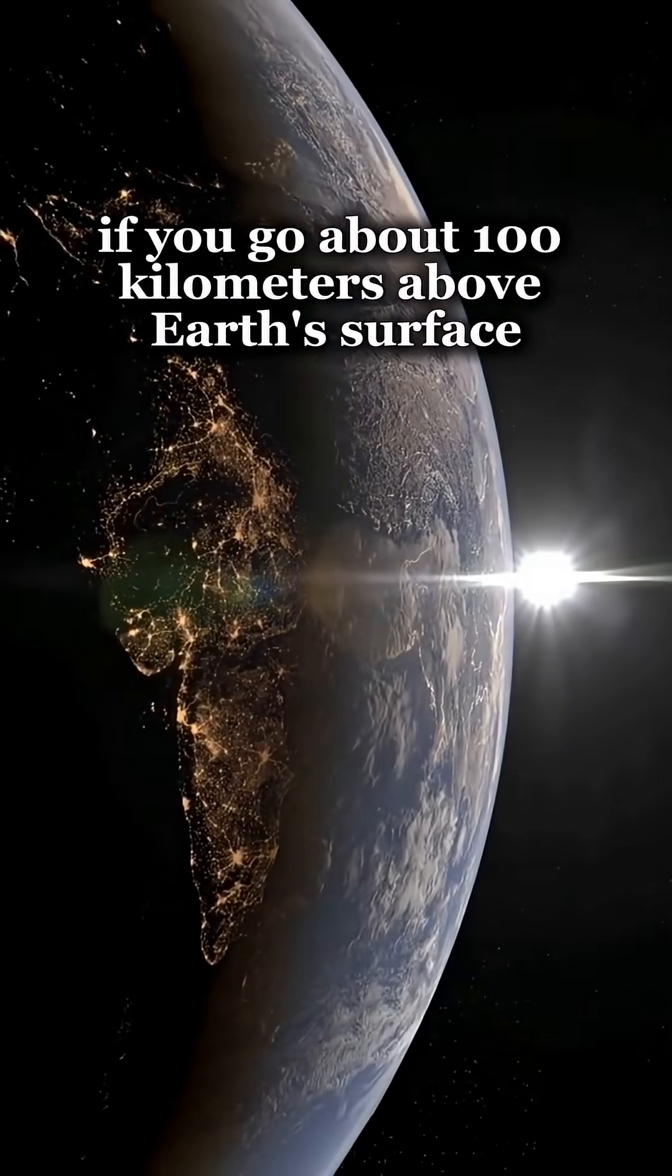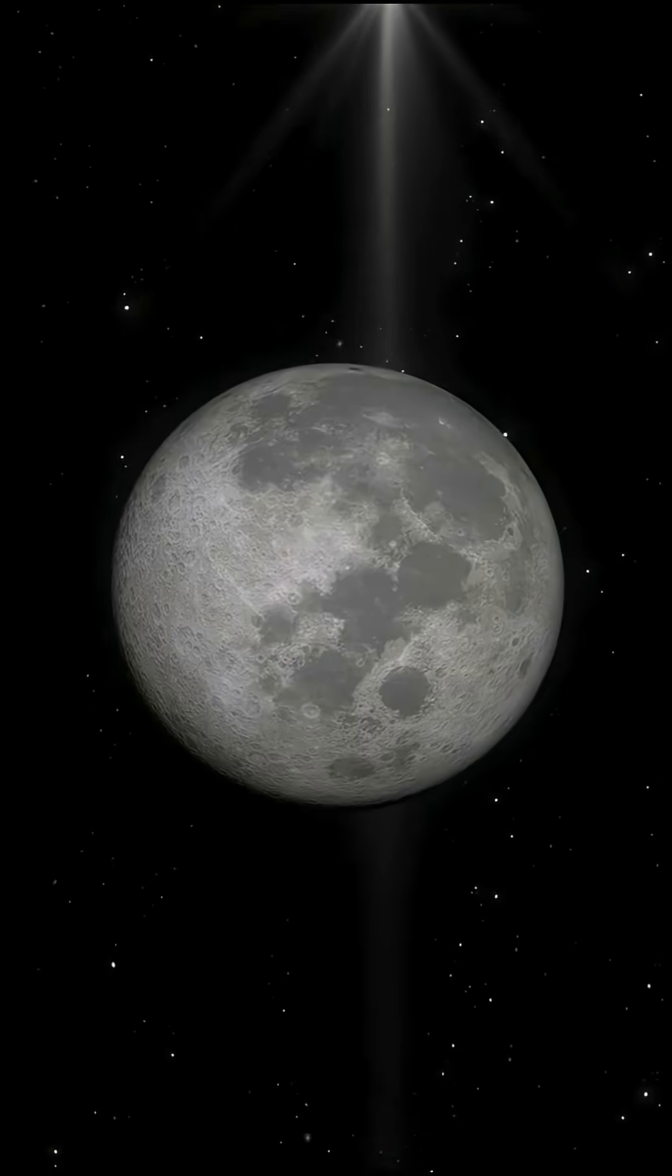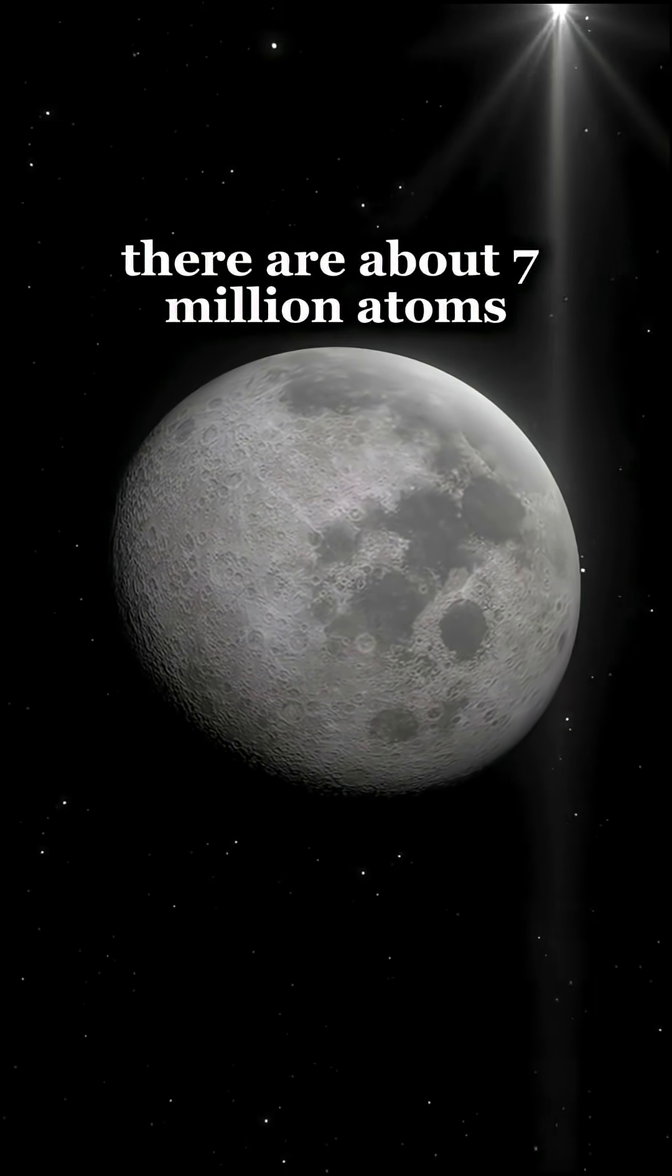If you go about 100 kilometers above Earth's surface, the number of atoms drops to about a million trillion. About a third of the way to the moon, there are about 7 million atoms.